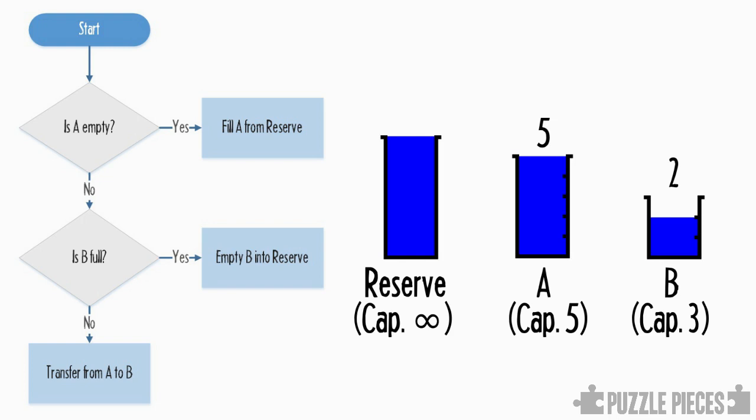And now, on the next step, A is not empty, and B is not full either, so we'll transfer as much as we can from A into B. Now, B's already got 2 units in it, and only has a capacity of 3. So, we can only pull the top 1 unit from A into B, and when we do that, we have 4 units remaining, which is the solution.